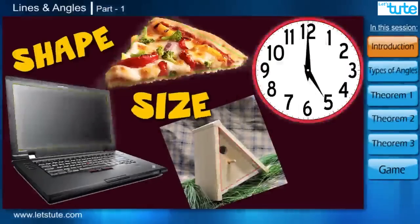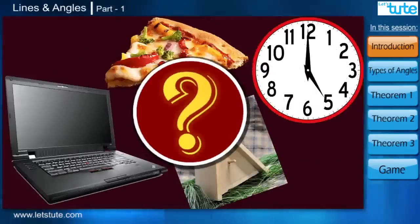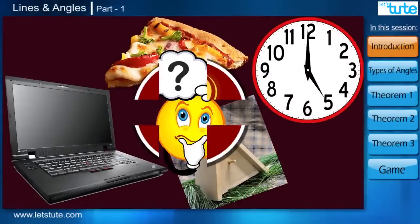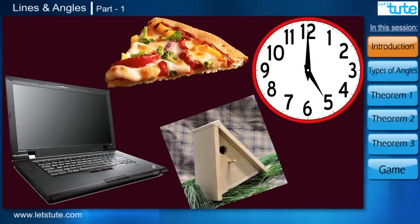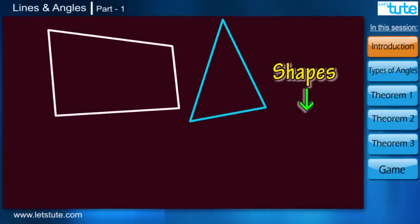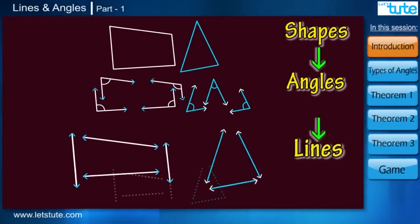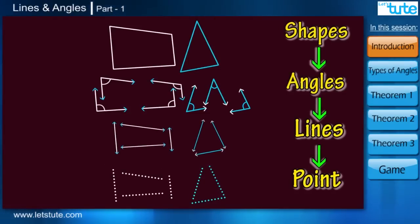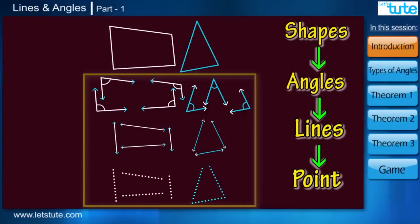Hi friends! Everything we have seen around has a particular shape, size, and dimension. Looking at these pictures, I'm sure many of you must have identified various shapes in these images. But you never see things as a bunch of angles or few lines or just a cluster of points. When we break down all these shapes, it comes down to angles, further we get lines, and at the end we have a point. So today in this session, instead of learning the shapes as a whole, let's learn the various elements that form these shapes.